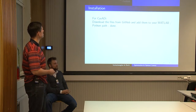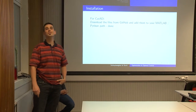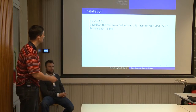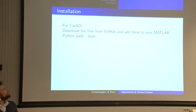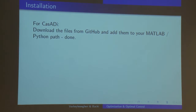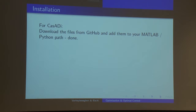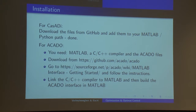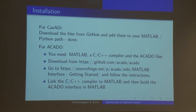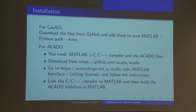Let's jump right in. For CASADI, you just download the files and add it to your MATLAB path. For ACADO, it's a bit more complicated — you need MATLAB, a C or C++ compiler, and the ACADO files downloaded from GitHub. You follow the instructions to link your C compiler to MATLAB and then build the ACADO interface. It's basically a five-minute thing.